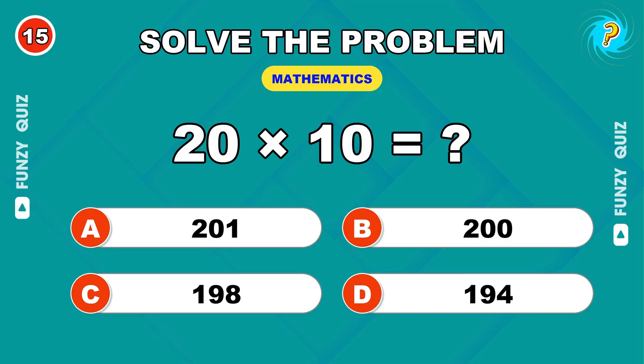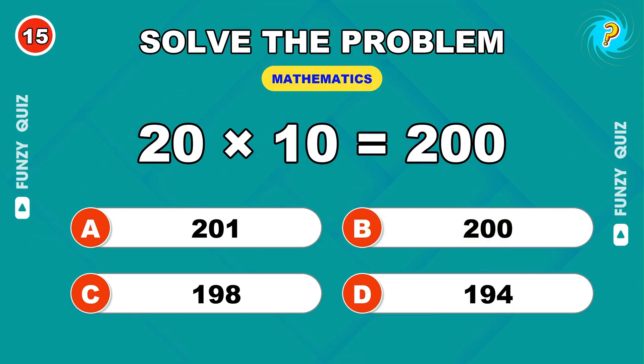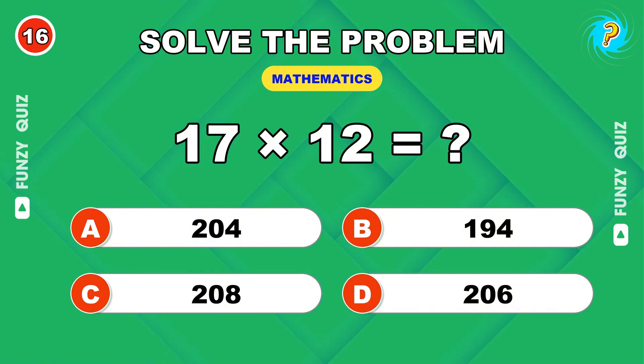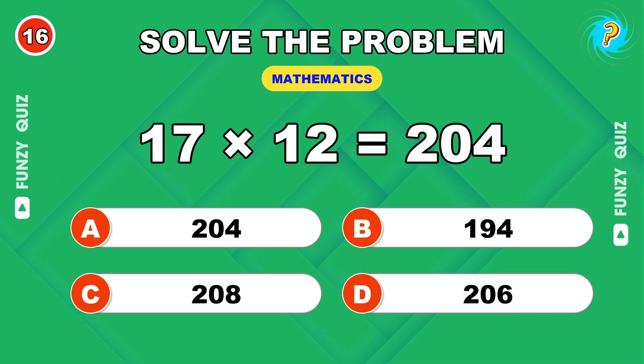Level up time. 20 times 10? 200. Here's a tricky one. 17 times 12? 204.